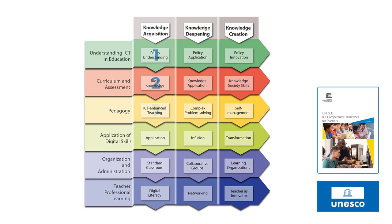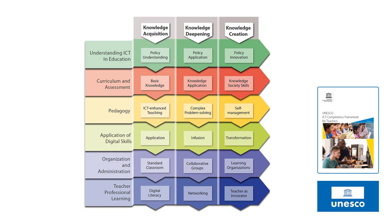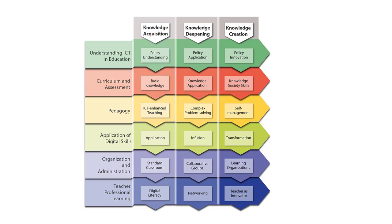Now that we understand the rows or aspects and the columns or levels, you can see that at the intersection of these rows and columns, 18 competencies are positioned. In the next video, we'll look at these 18 competencies and how the framework suggests they be broken up into smaller objectives. The framework also offers examples and suggestions about what can be done to help teachers acquire these objectives.